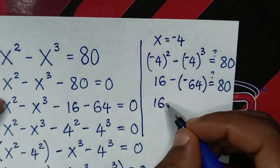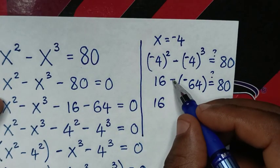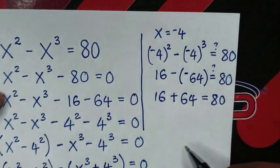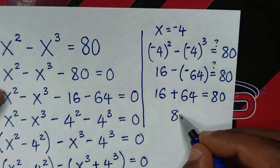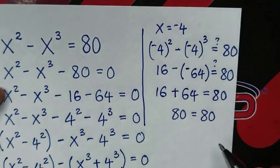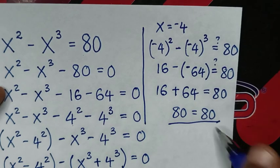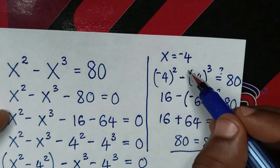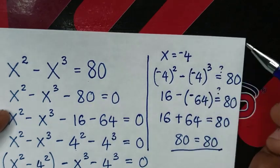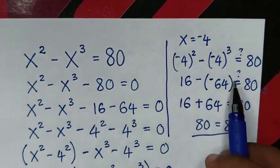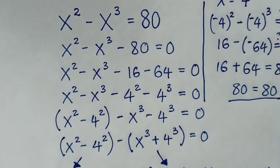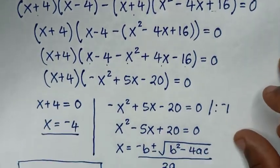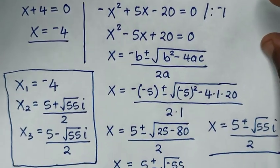Then it will be 16, and opening the bracket, negative and negative gives positive 64, equals 80. Now 16 plus 64 is 80, equals 80. Left side and right side are equal, so it is true for the value of x which is negative 4. The real solution and also the complex solutions are correct. Thank you for watching — don't forget to subscribe to my channel, and see you in the next video. Bye bye.